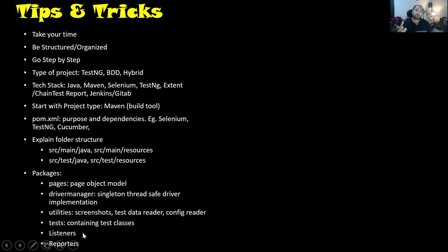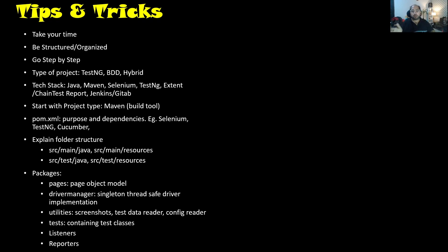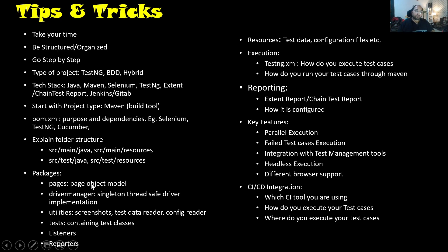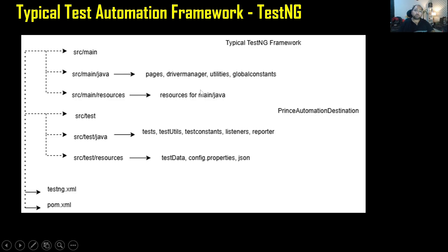Then you can talk about listeners — you can talk about ITestListener, IAnnotationTransformer, and IRetryAnalyzer. One more important thing is reporting. Sometimes people go off track and forget to mention reporting, but reporting is a very important part because when we are testing something, reporting becomes essential. You can talk about assertions as well — which assertions you are using in your framework. This is how you can define the different packages. Along with defining the packages, you need to tell where exactly you're maintaining them. For example, we are maintaining the pages in SRC Main Java, driver manager in SRC Main Java. This will give confidence to the interviewer that you are very well aware and haven't just read it.